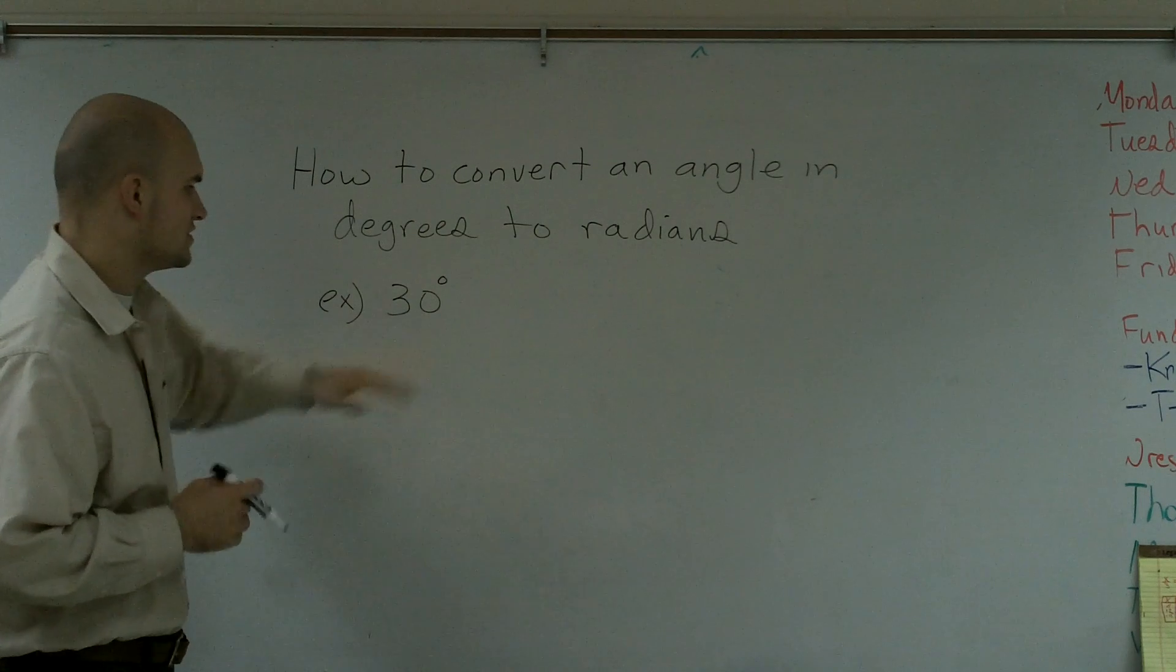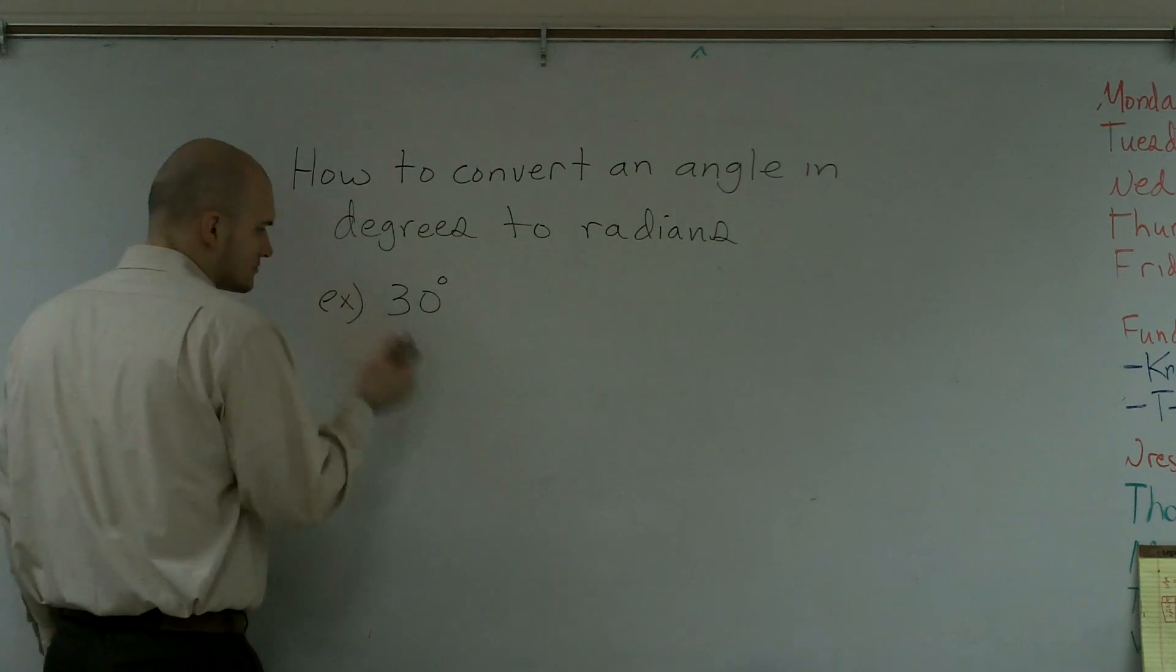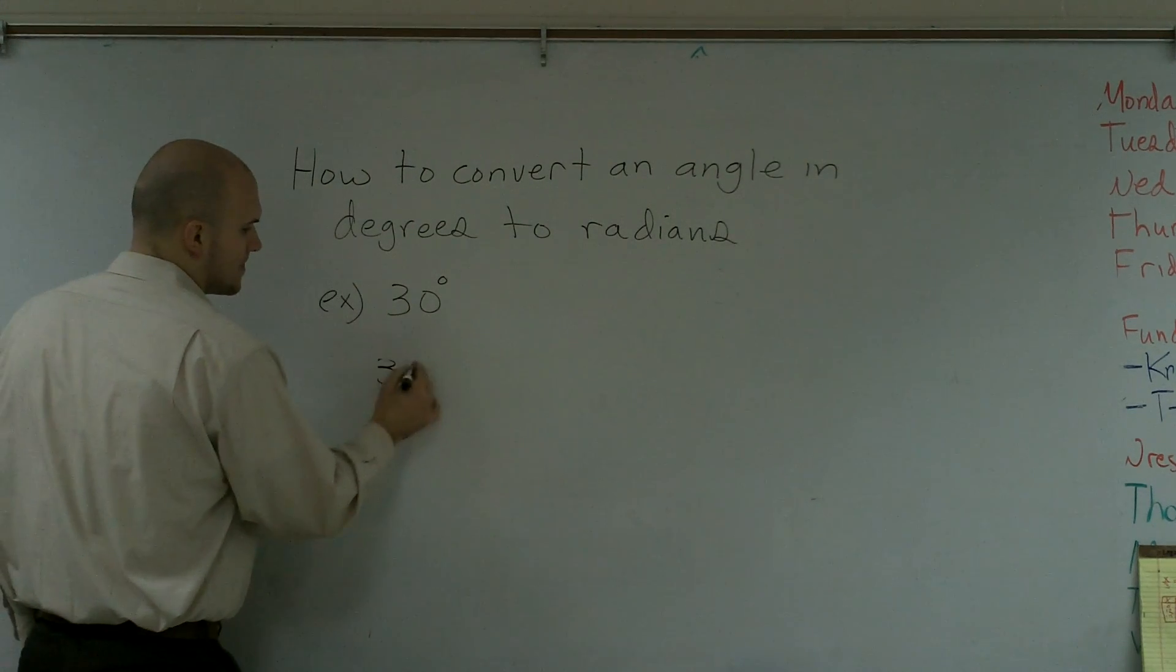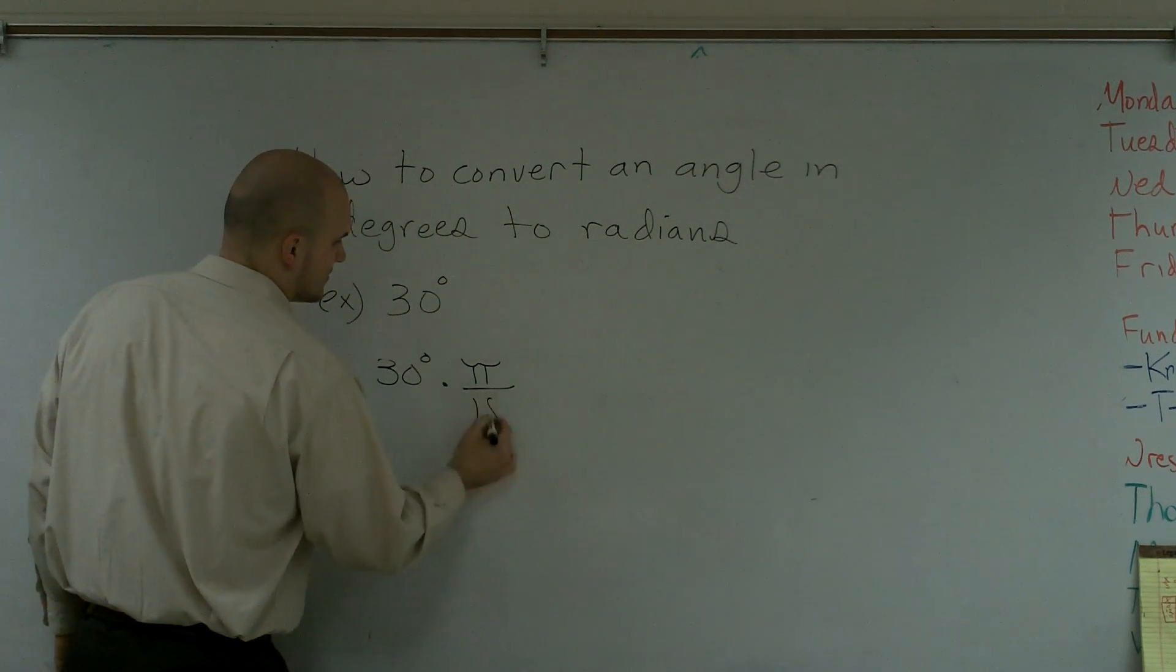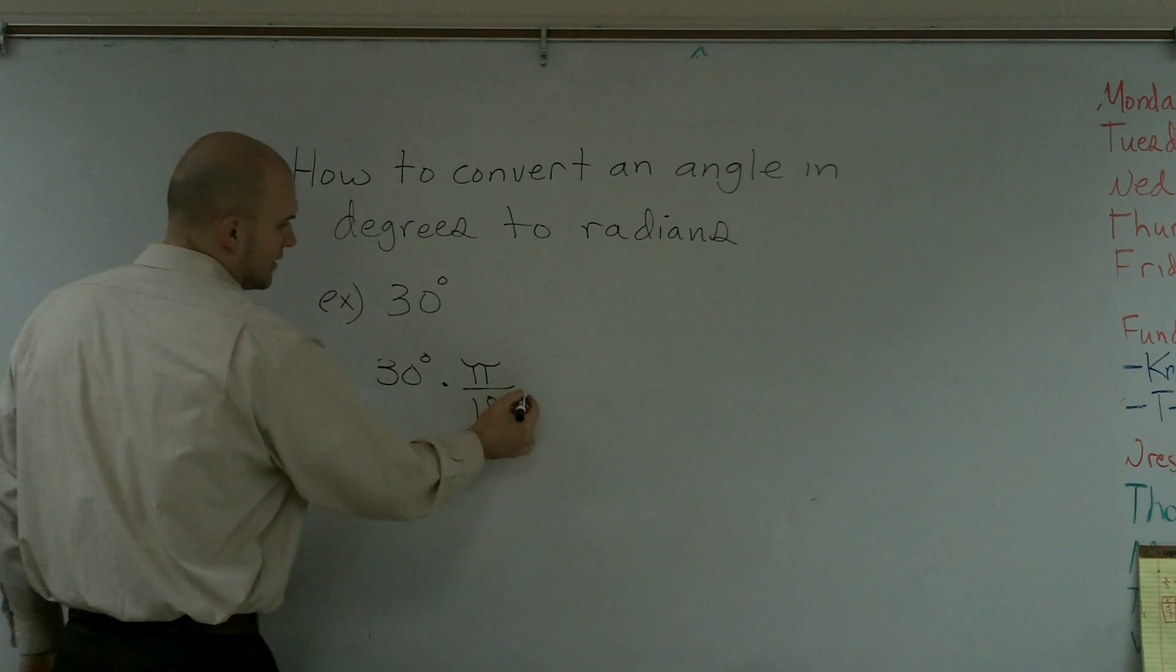So to go ahead and convert this, we have 30 degrees, and you're going to multiply that by pi over 180. And that's degrees as well.